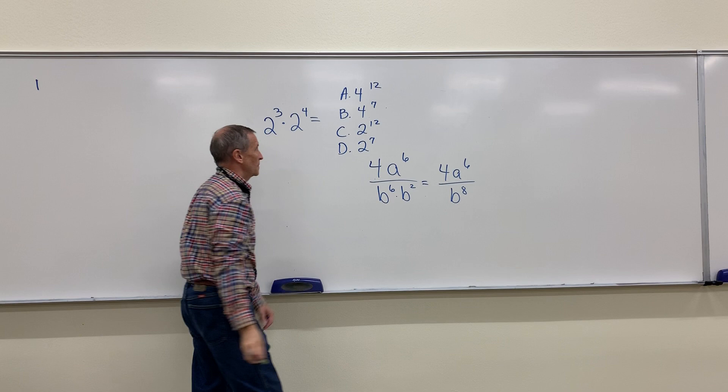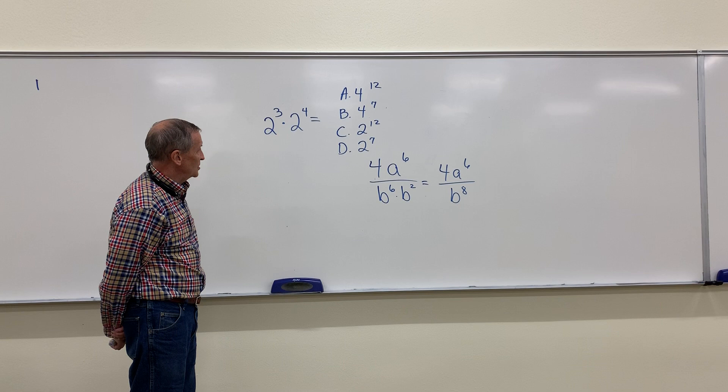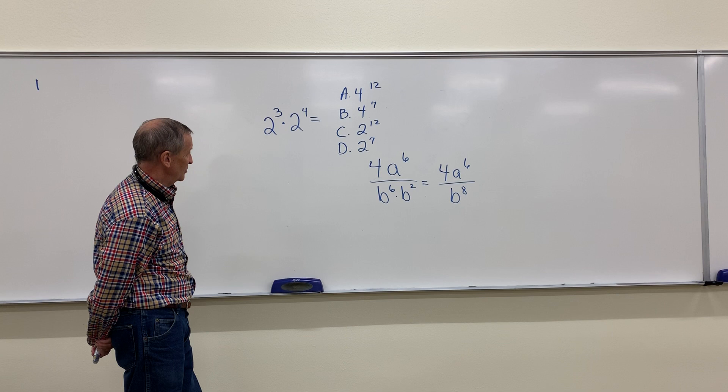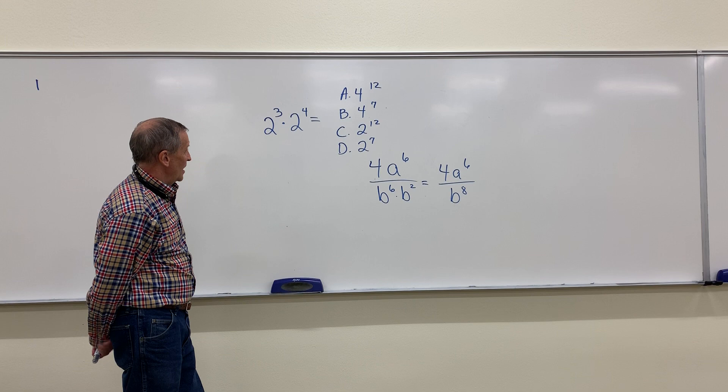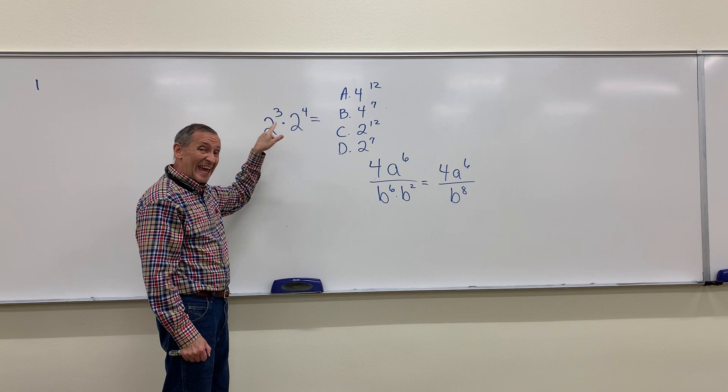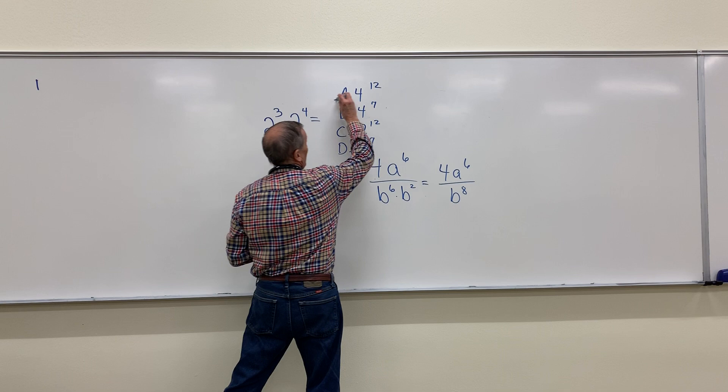Think about that for a second and choose A, B, C, or D. And then we'll talk about which one's the correct solution. Alright, first thing to notice is I've got the same base, right? Which means you're going to be adding your exponents. So 3 plus 4 is 7. I'm not going to have a 12 as an exponent. So those two guys are out.